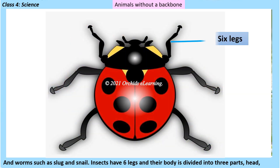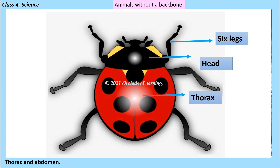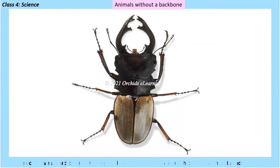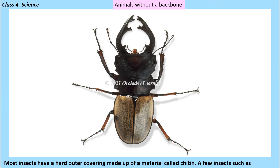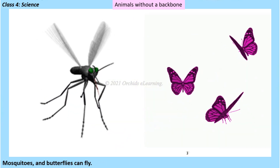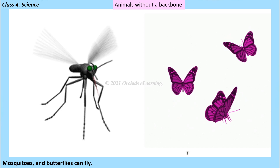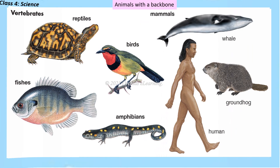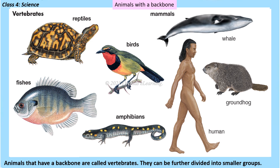Insects have six legs and their body is divided into three parts: head, thorax, and abdomen. Most insects have a hard outer covering made up of a material called chitin. A few insects such as mosquitoes and butterflies can fly.